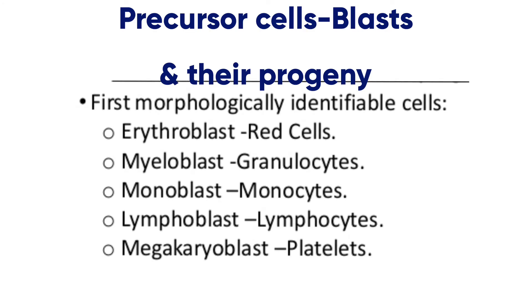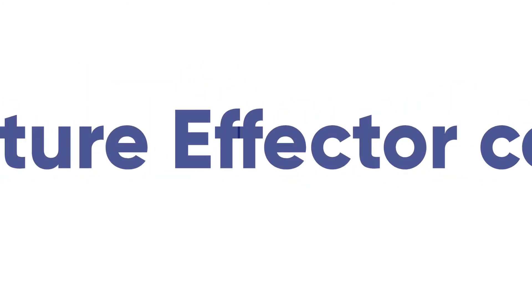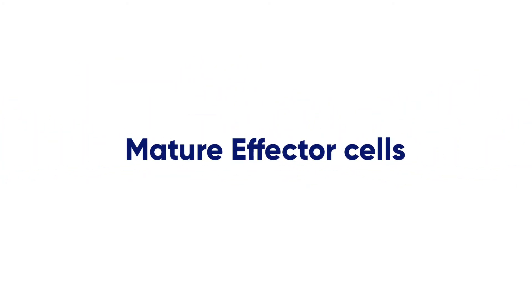The next level is precursor cells, which are the blasts and their progeny. Erythroblasts develop into red blood cells, myeloblasts into granulocytes, monoblasts into monocytes, lymphoblasts into lymphocytes, and megakaryoblasts into platelets.